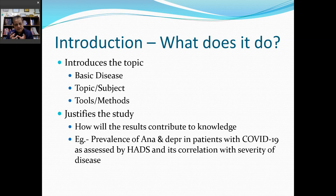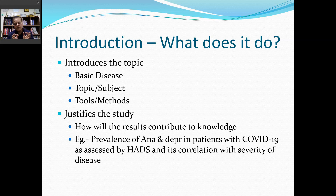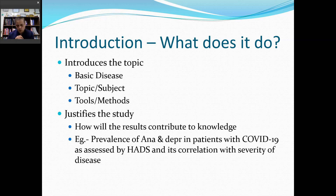The third paragraph is regarding the tools or materials and methods — in this case, the tool is the Hospital Anxiety and Depression Scale. So introduction: first paragraph regarding the basic disease, second regarding the subject, and the third regarding the tool. In the third paragraph you will describe what the Hospital Anxiety and Depression Scale is, results seen in general population or controls, and how it compares with Hamilton scale or other gold standard scales used by psychiatrists.